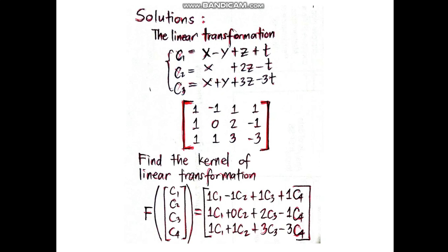Let's find the kernel of the linear transformation. We have F of the vectors c1, c2, c3, c4 equals the matrix times c1 - c2 + c3 + c4, c1 + 2c3 - c4, c1 + c2 + 3c3 - 3c4.